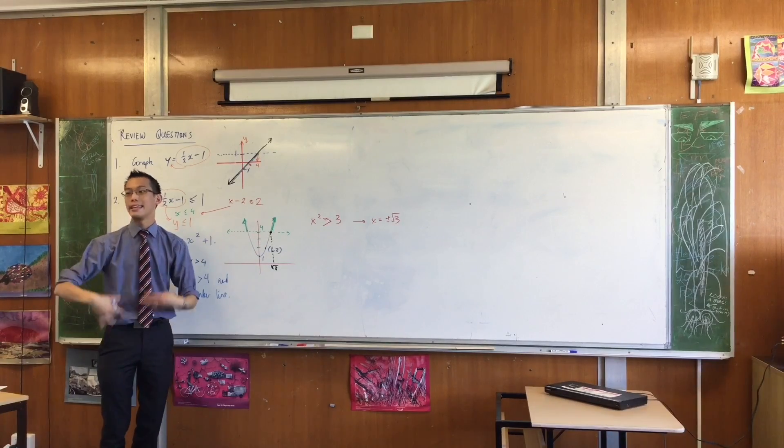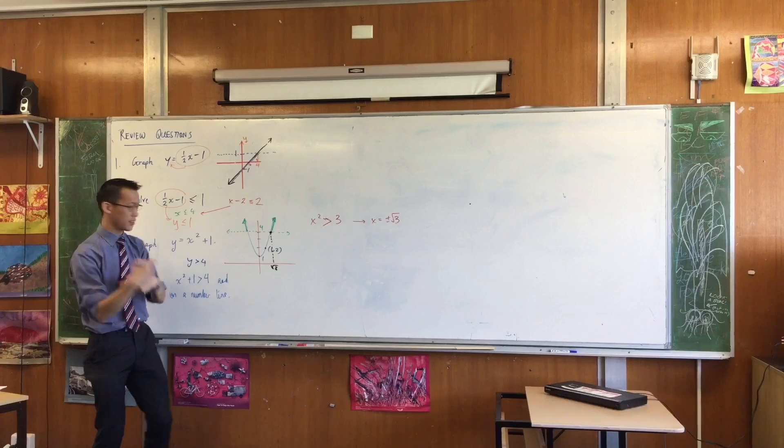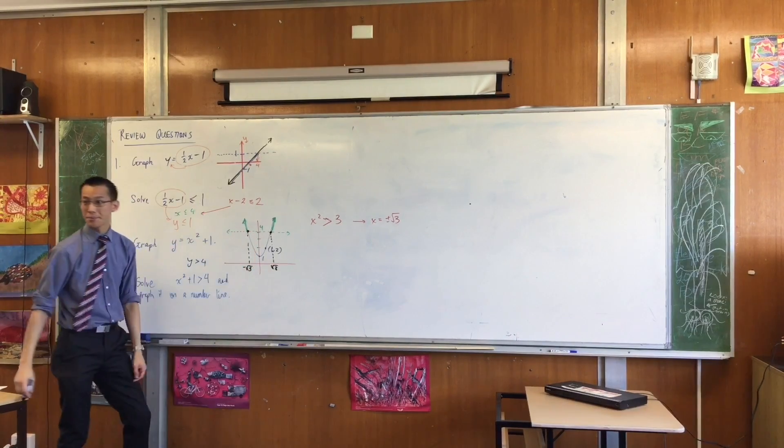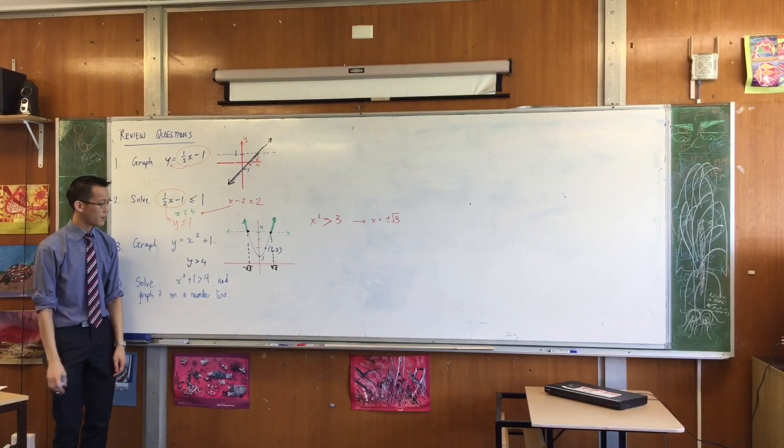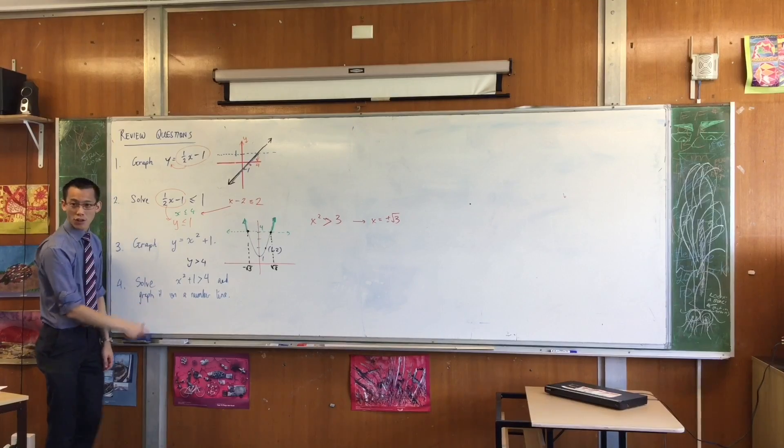And in the same way, where's negative root 3? Over on the reflected side. That's negative root 3. And again you can supply it into the equation, you'll still get y equals 4. And this is why this is so useful. Graph it on a number line. You're looking for x values, the ones that work.